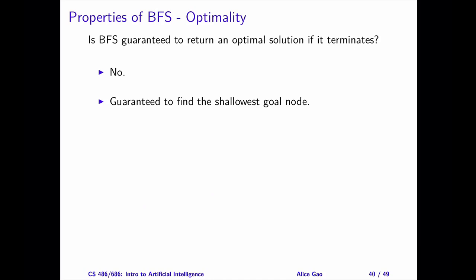However, we can achieve a slightly weaker property. BFS is guaranteed to find the shallowest goal node since it explores the search tree level by level. In a special case, when every edge has the same cost, the solution returned by BFS is the optimal solution.